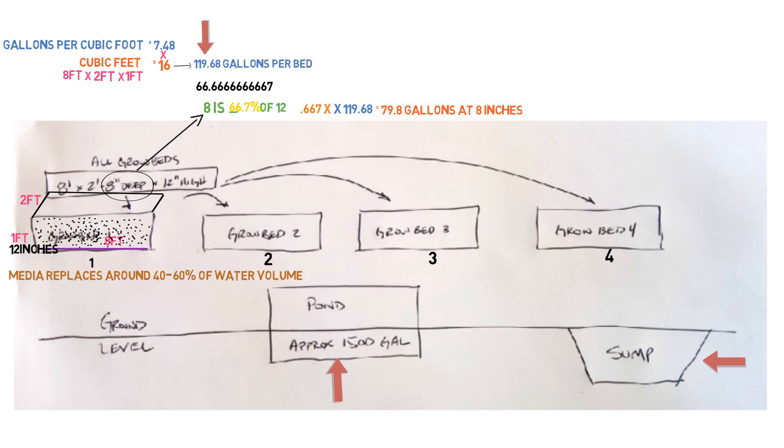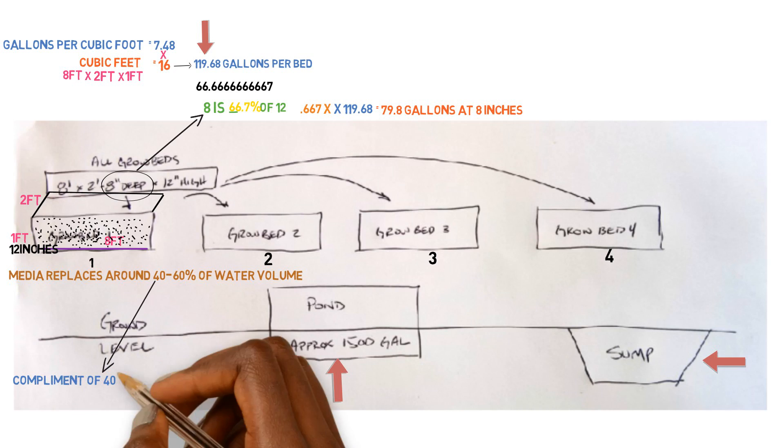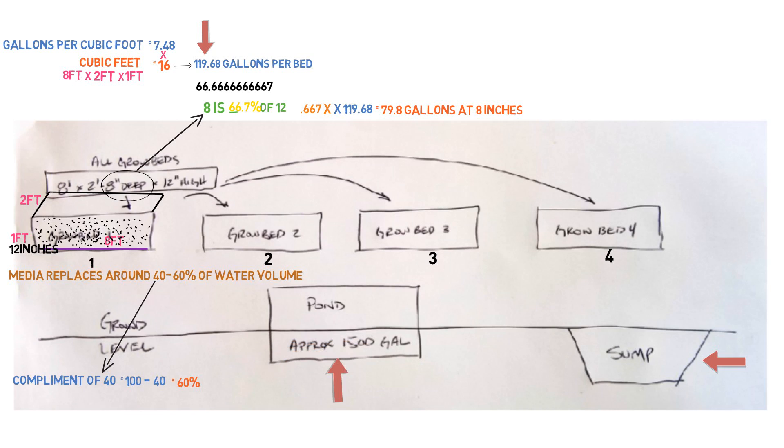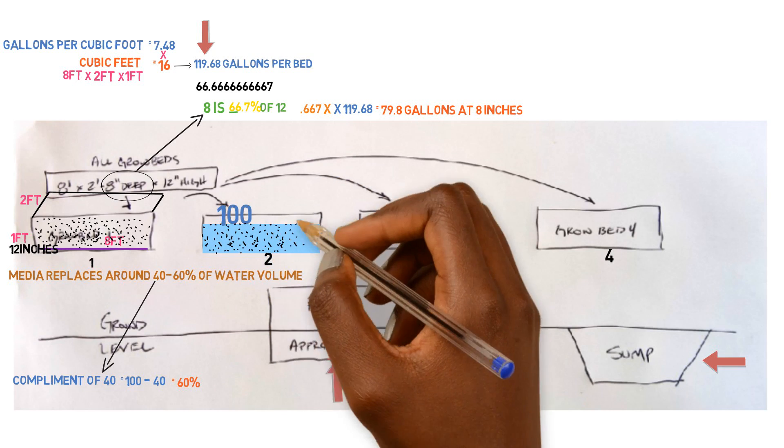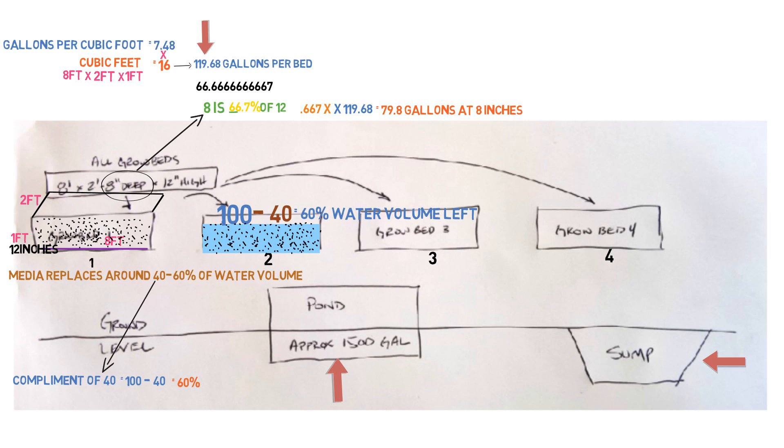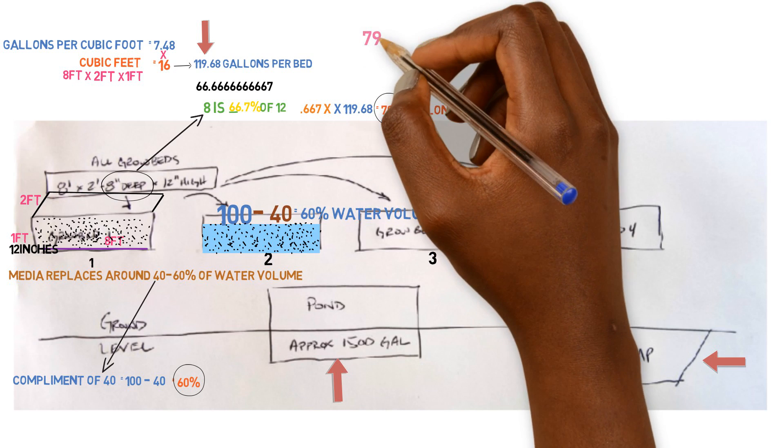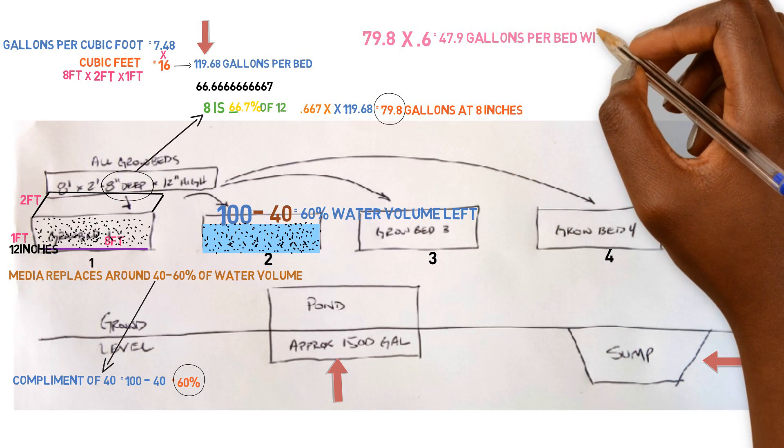So in order to find out how much water we just replaced, we need to find the complement of the 40%. So basically the way we do that is take 100 and subtract 40 from the 100, and that's going to give us 60%. So basically what that means is we had a hundred percent water volume. We put media in there that took up 40% of the value. So we're left with 60. So that's how much water volume we have left. So we'll take our 60% and we'll take our amount of water that we had 79.8 gallons per bed at the eight inches. And we'll multiply those two together to find out exactly how much water we have left over once we put the media in. So that is 79.8 times 0.6, and that's going to give us 47.9 gallons per bed with the media inside of it.